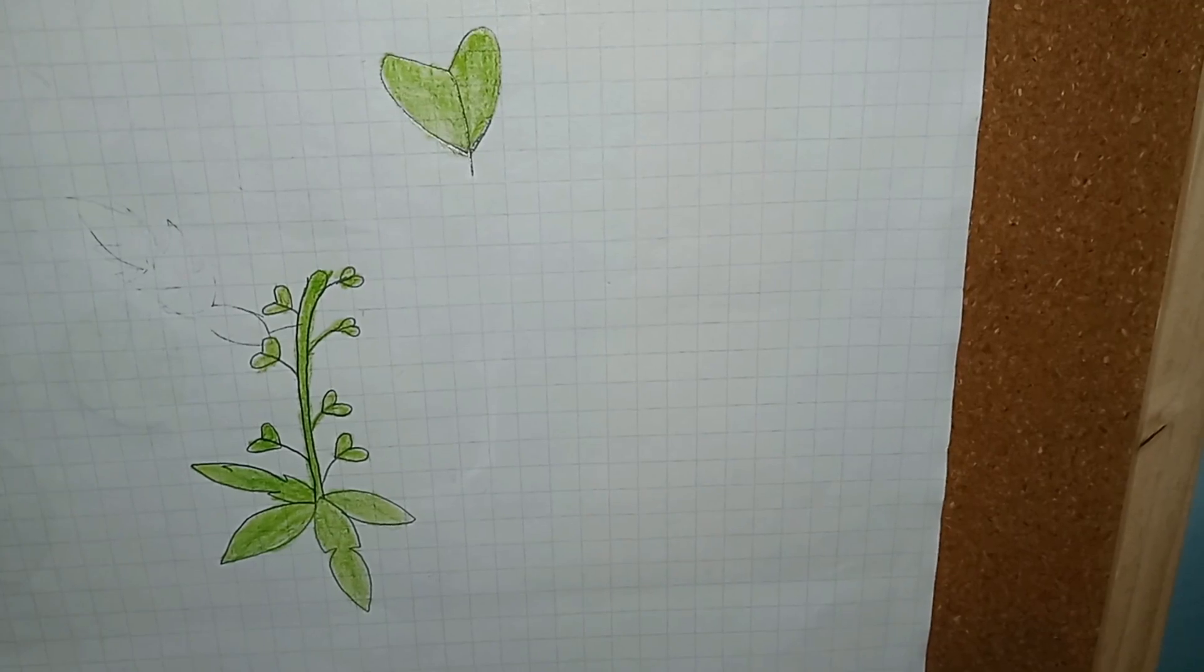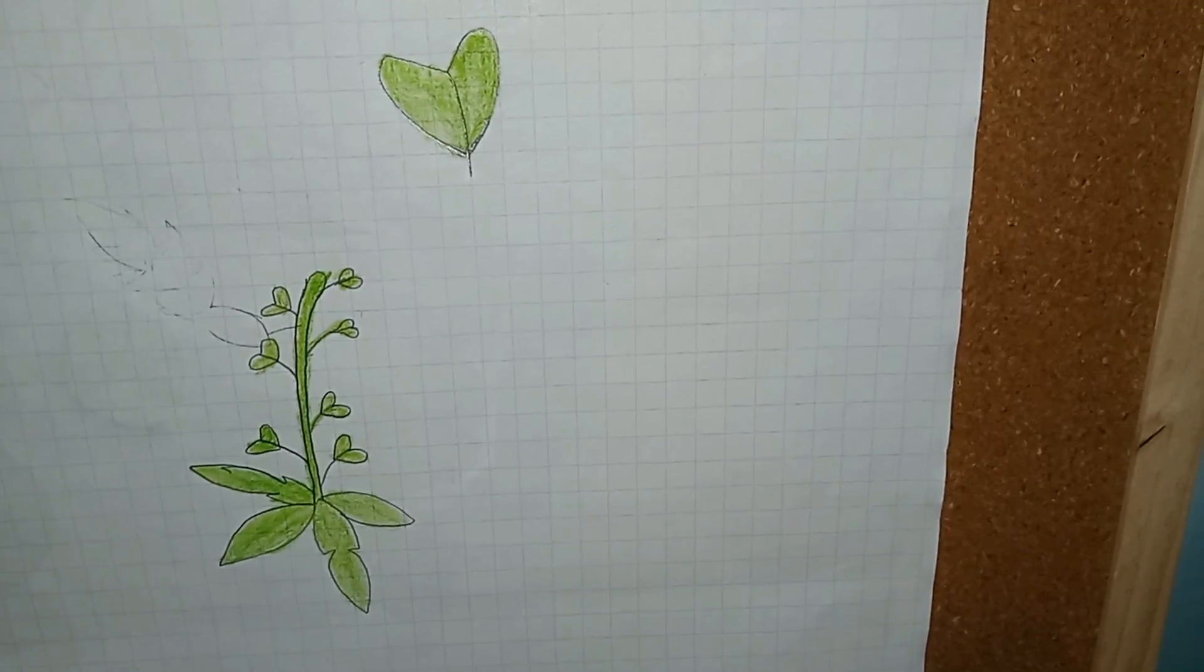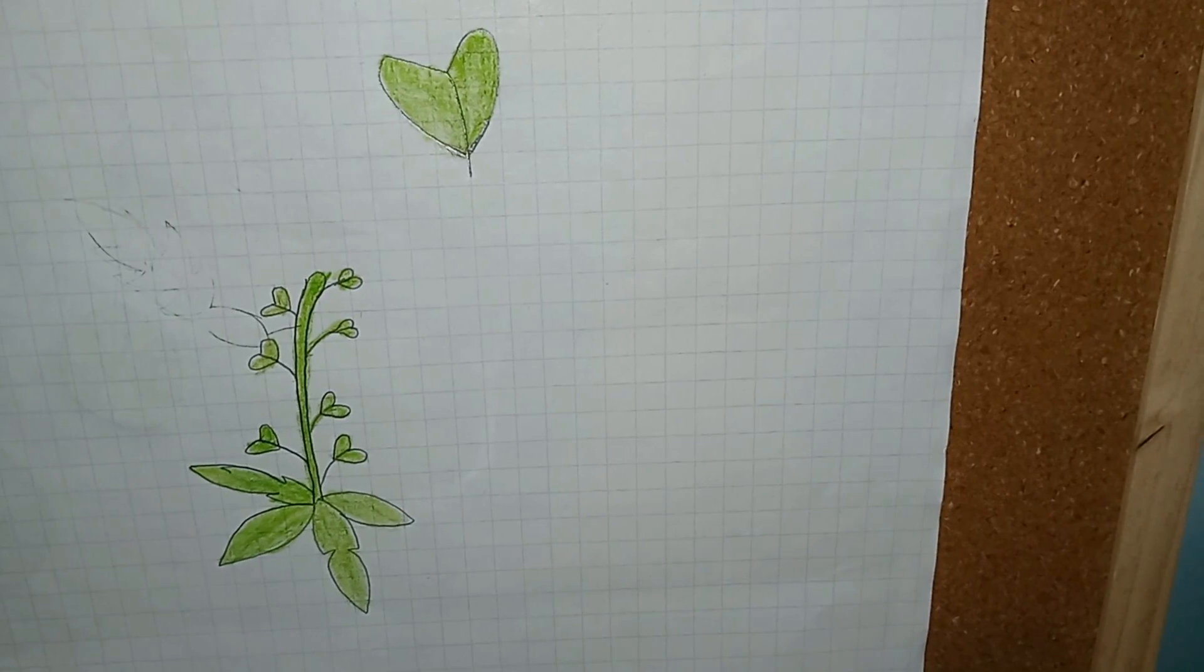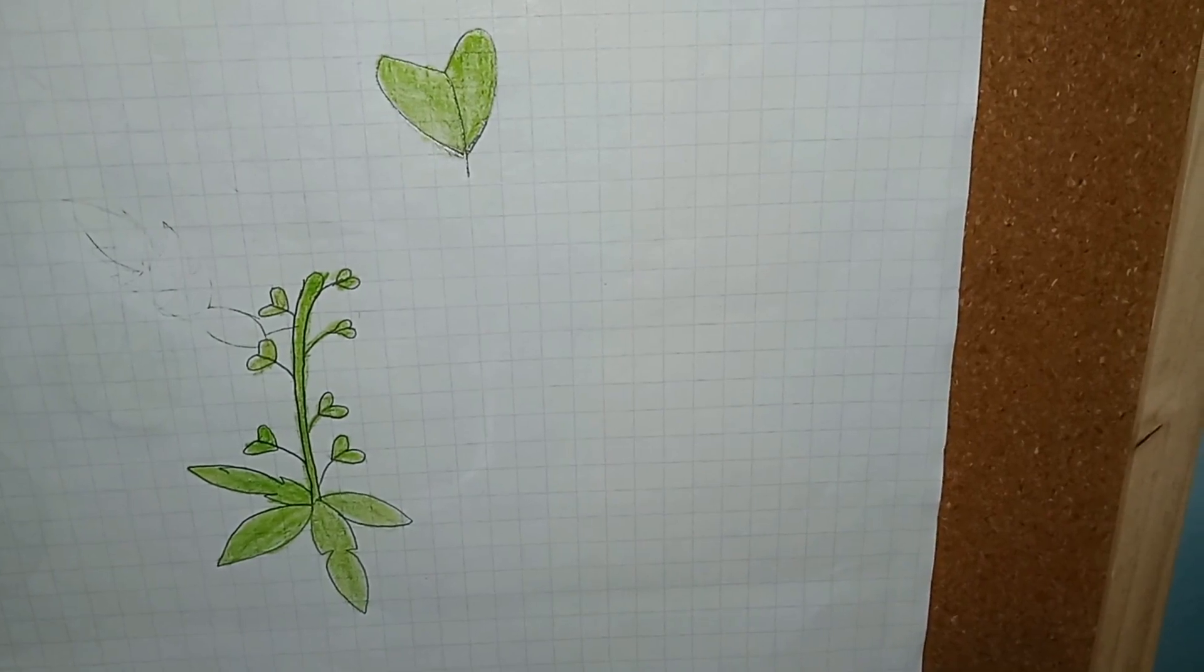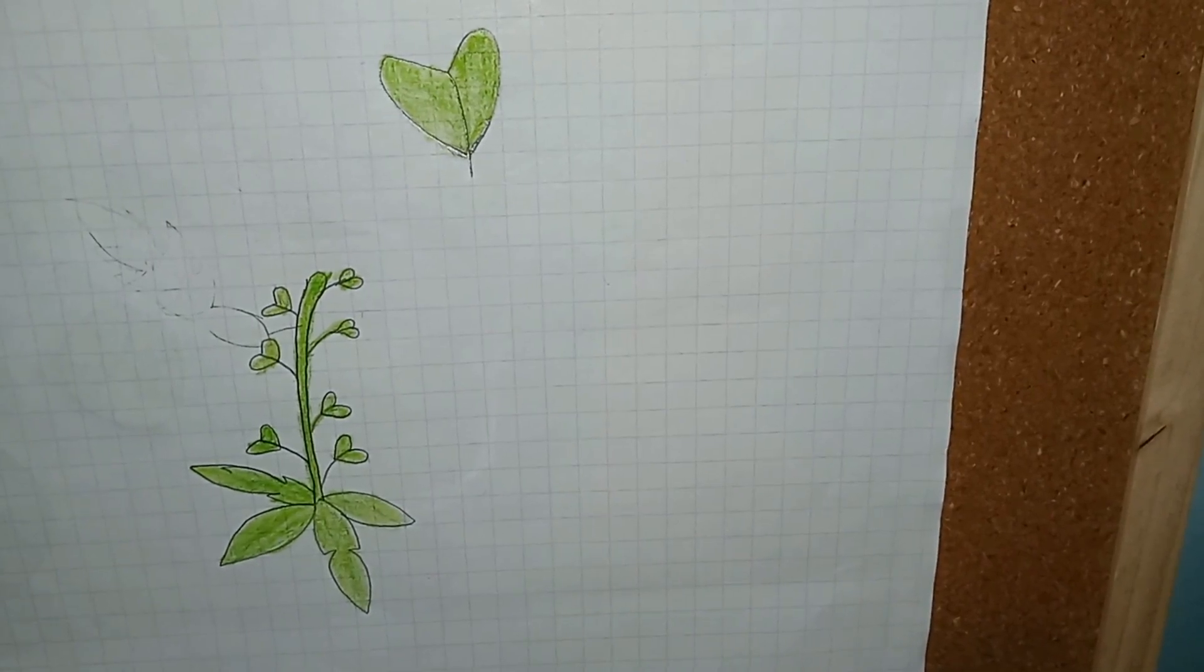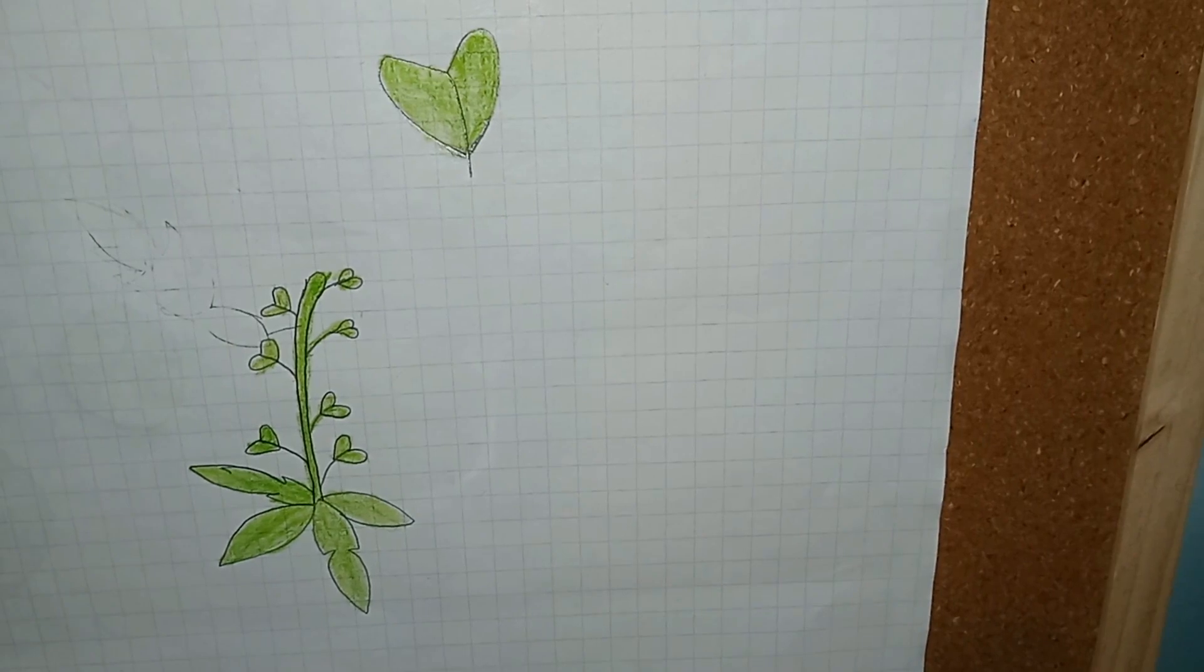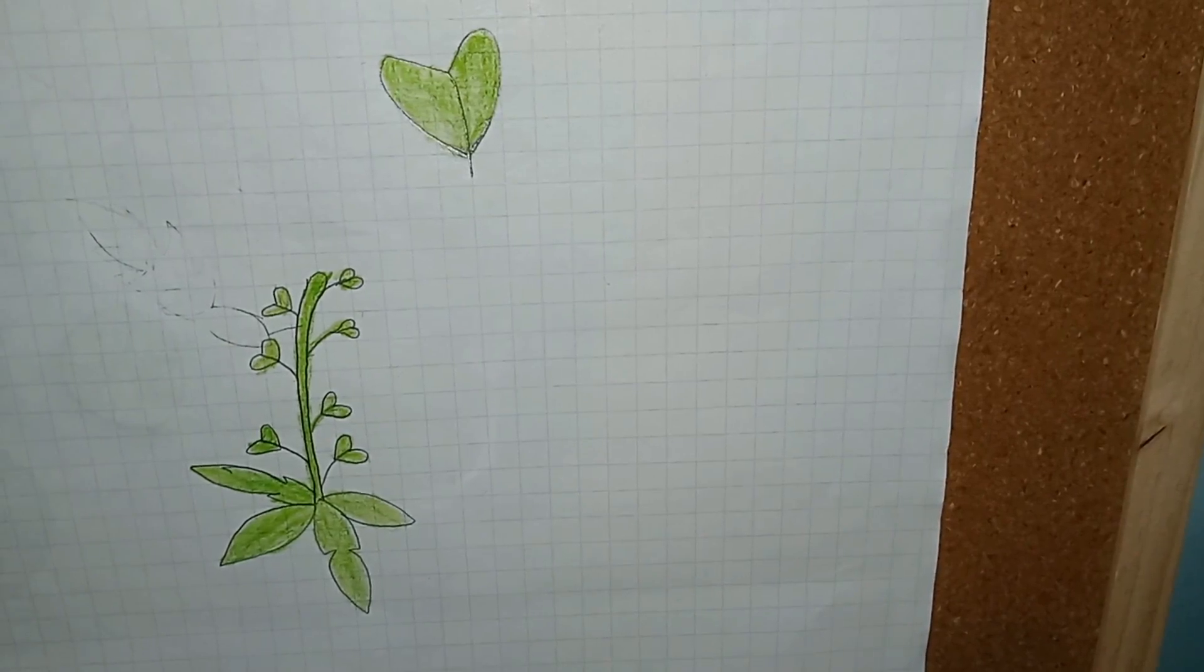Today we are talking about Shepherd's Purse, another plant species, so let's jump into it. This plant starts off with a rosette of leaves, and springing from the center is a stem that is going to have several white flowers on top of it and along the side of it.